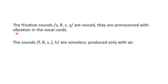These fricative sounds are divided into two groups according to their voicing features. The sounds /v/, /ð/, /z/, and /ʒ/ are voiced — voiced sounds are produced with a vibration in the vocal cords. The rest of the sounds — /f/, /θ/, /s/, /ʃ/, and /h/ — are voiceless; they are produced with no vibration in the vocal cords. If you try to pronounce the voiced group, you'll notice a vibration in the vocal cords, while with the voiceless group there will be no vibration.